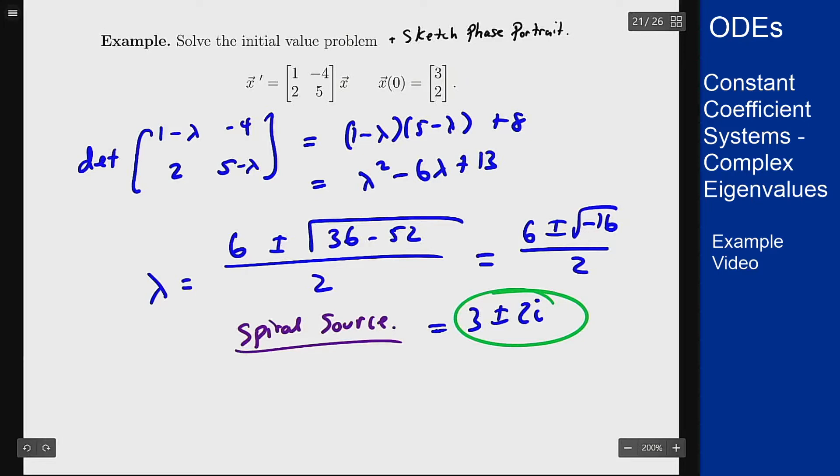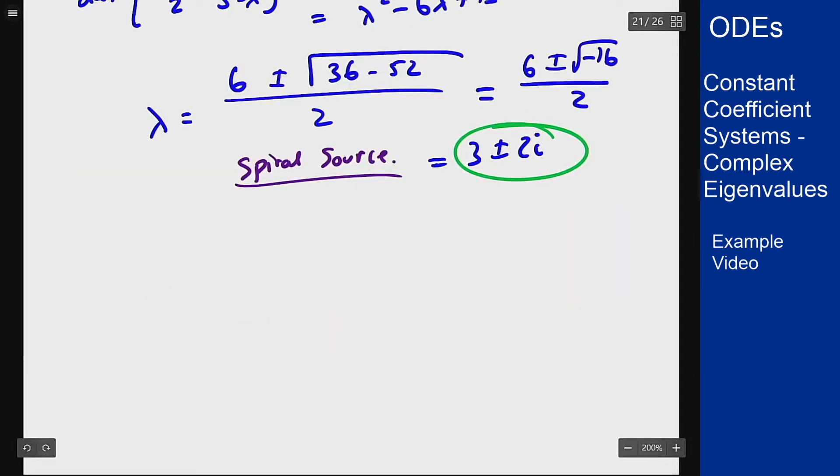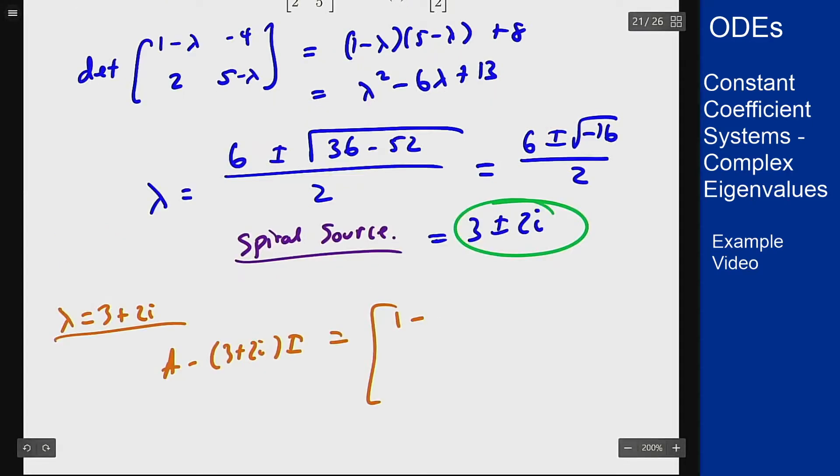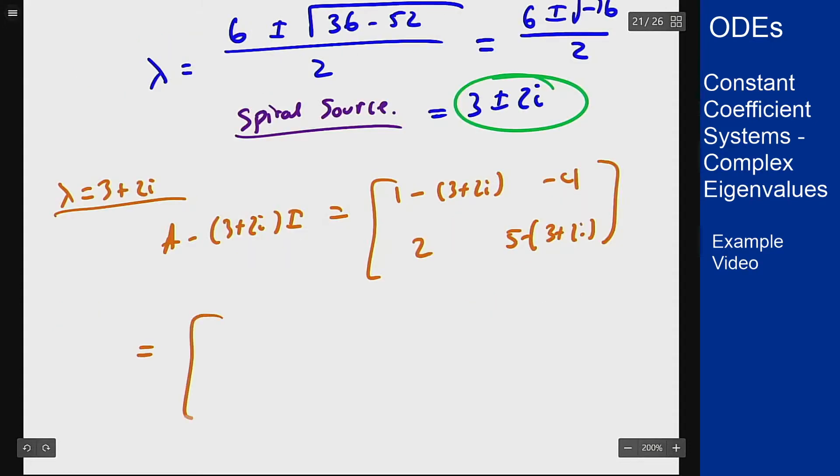So let's now hunt for the eigenvector. We take λ to be 3 + 2i. The matrix A - (3 + 2i)I becomes [1 - (3 + 2i), -4; 2, 5 - (3 + 2i)] which is [-2 - 2i, -4; 2, 2 - 2i].